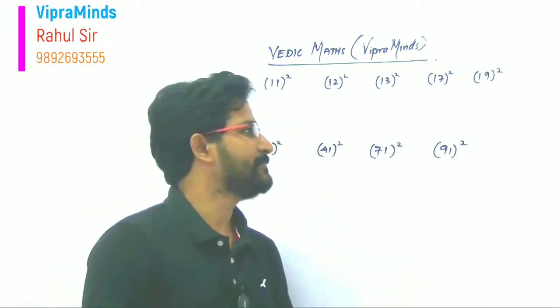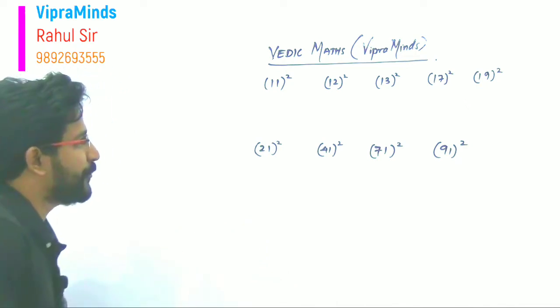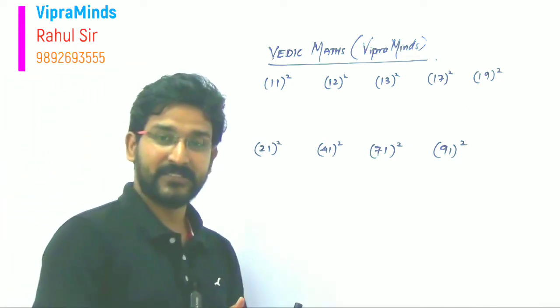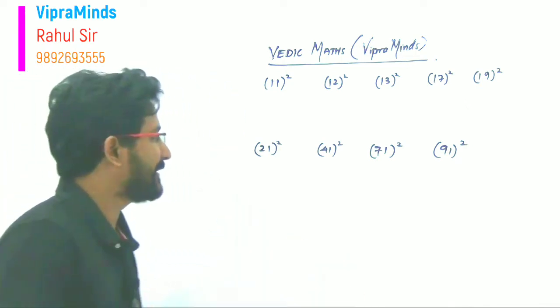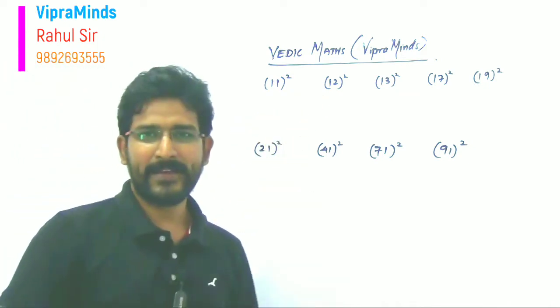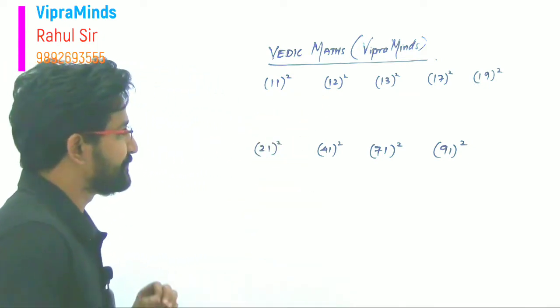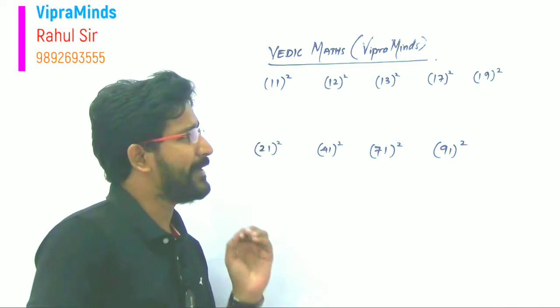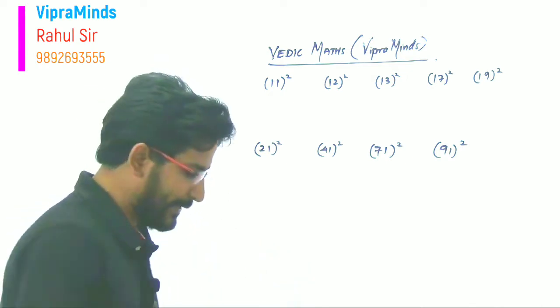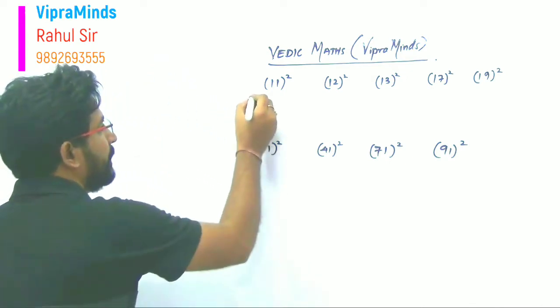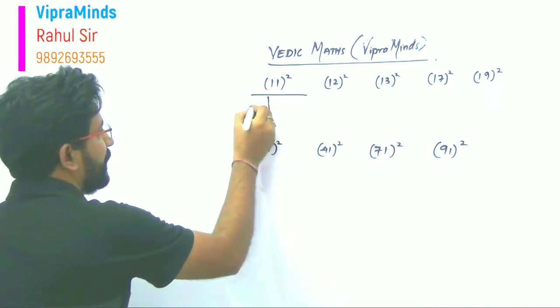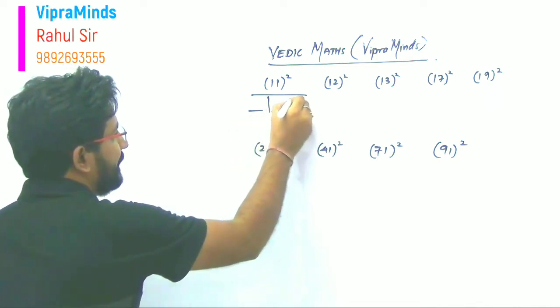So let's start with the trick. For example, you want to find out the square of numbers that start with one. Examples: 11, 12, 13, 18, 17, 19. So what do we do here? Here we have three blocks. First block is here, second and third.